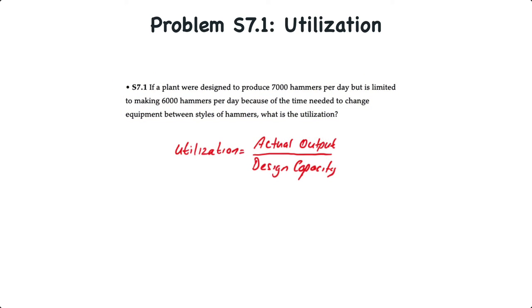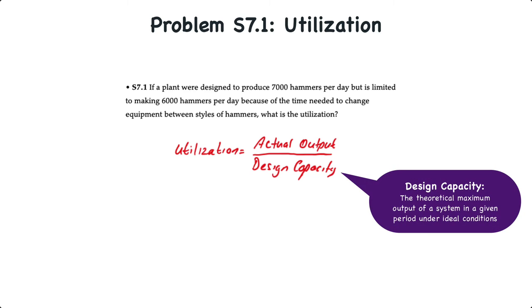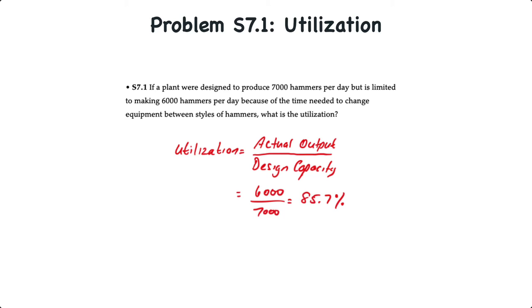The formula for utilization is either actual or planned output divided by the design capacity. Design capacity is a theoretical maximum output of a system in a given period under ideal conditions. So actual output is 6,000 units per day and the design capacity is 7,000 units per day. Therefore utilization is 85.7%. Now move on to supplement problem 7.2.